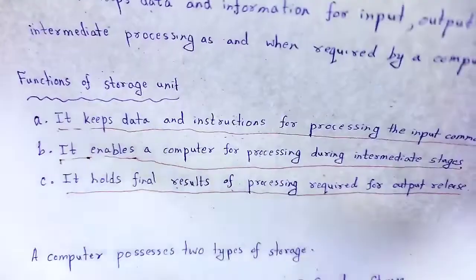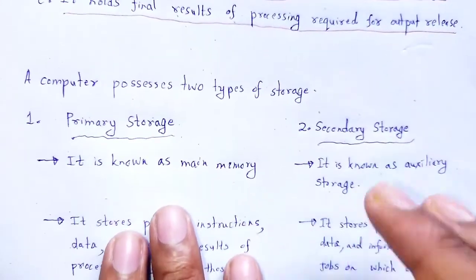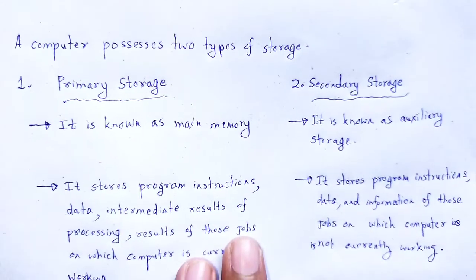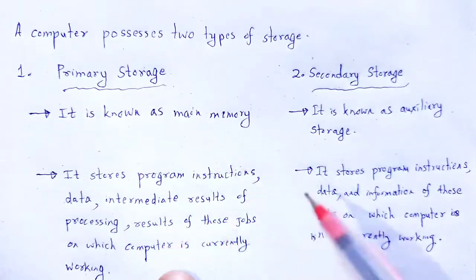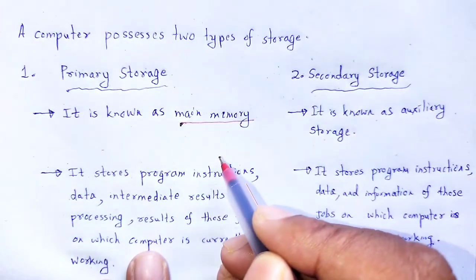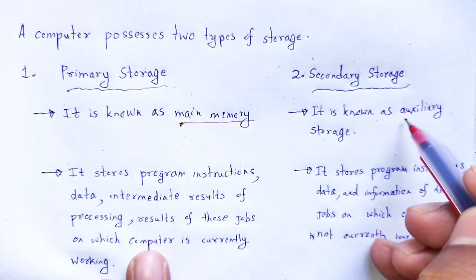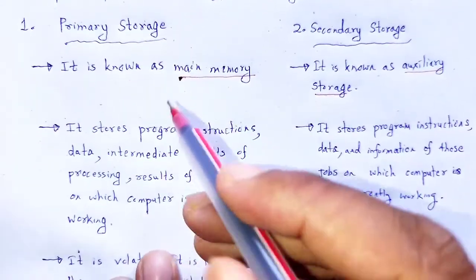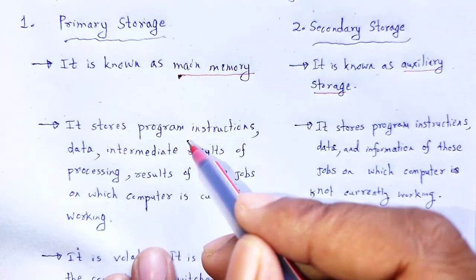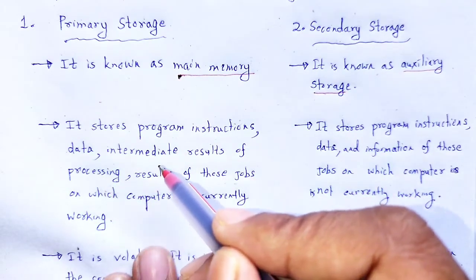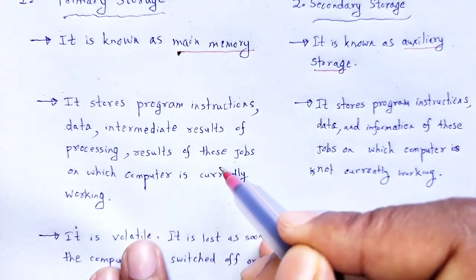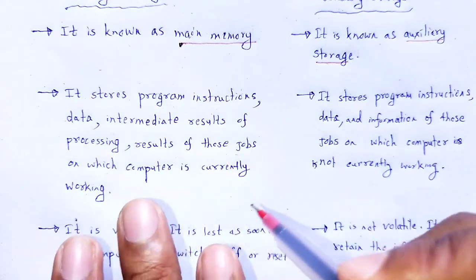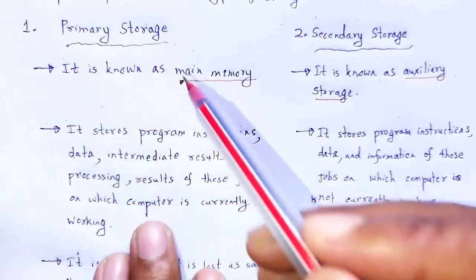A computer possesses two types of storage units. One is primary storage, that is the main memory; another is secondary storage, that is the auxiliary storage. In primary storage, it stores program instructions, data, intermediate results of processing, and results of those jobs on which the computer is currently working. These instructions or data are stored in primary storage.